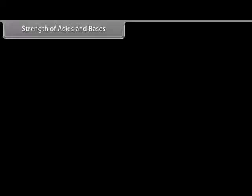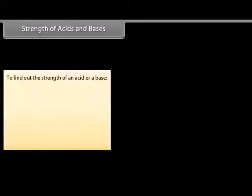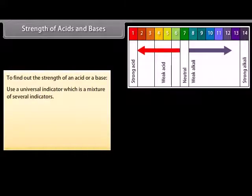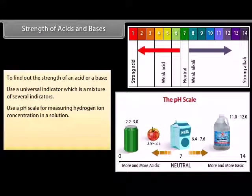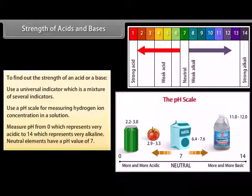You need to use a universal indicator to find the amounts of ions present in a solution, or to find out how strong an acid or base is. The universal indicator is a mixture of several indicators and shows different colors at different concentrations of hydrogen ions in a solution. A pH scale is a scale for measuring hydrogen ion concentration in a solution. You can measure pH from 0, which represents very acidic, to 14, which represents very alkaline. Neutral elements have a pH value of 7.